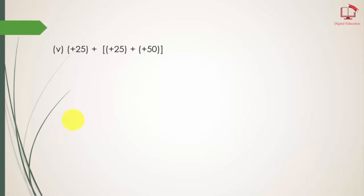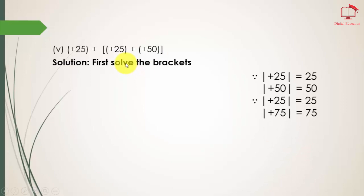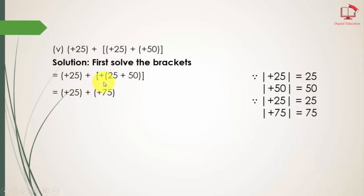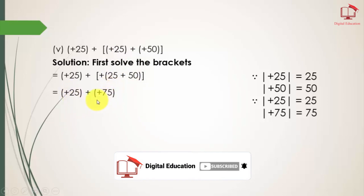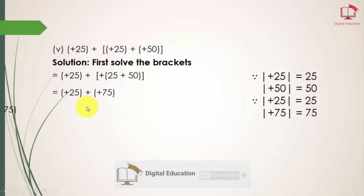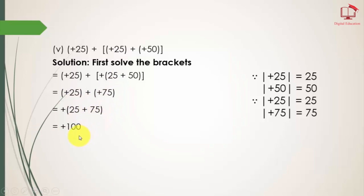Part number 5: same, firstly we solve the square bracket. The absolute values of the integers are 25 and 50. The positive symbol is common, so 50 plus 25 gives 75. Now we put the absolute values of the next two integers: 25 and 75. Adding these two integers gives 100, and we write the positive number as it is. So students, this is our exercise 4.2 that is completed in today's lecture.